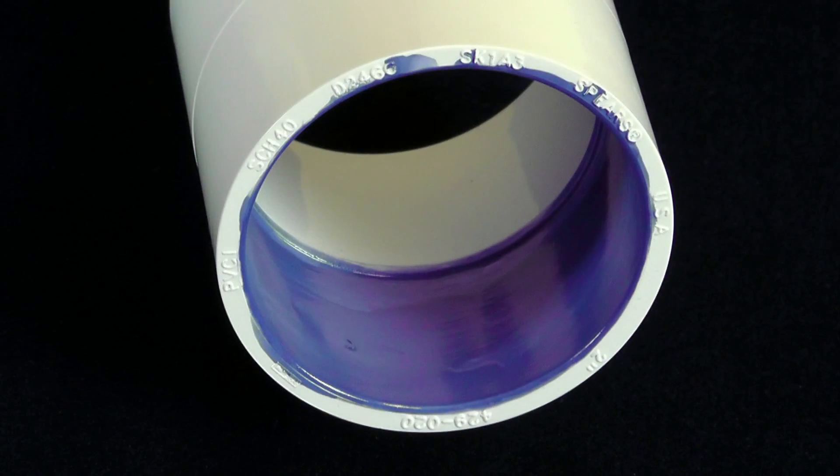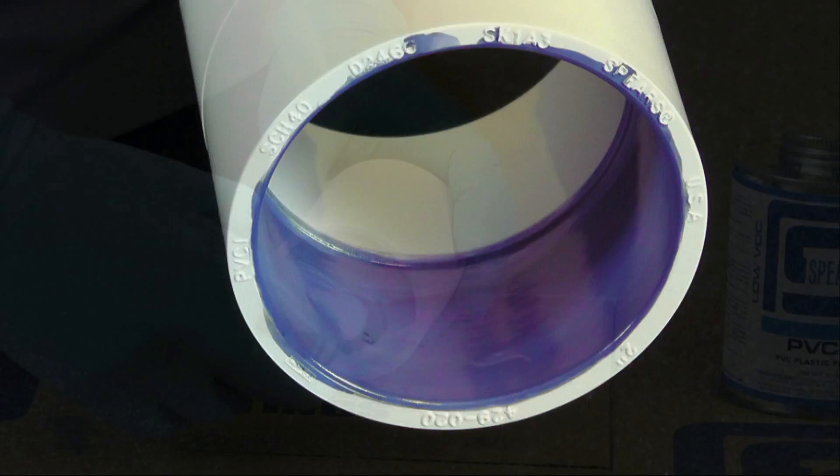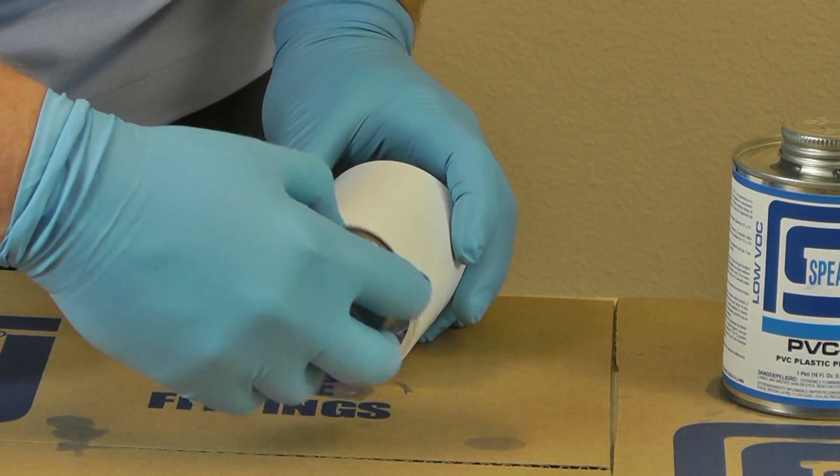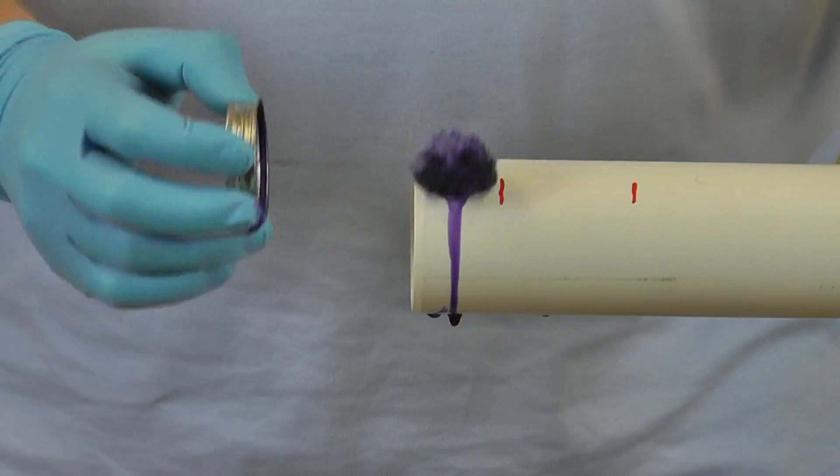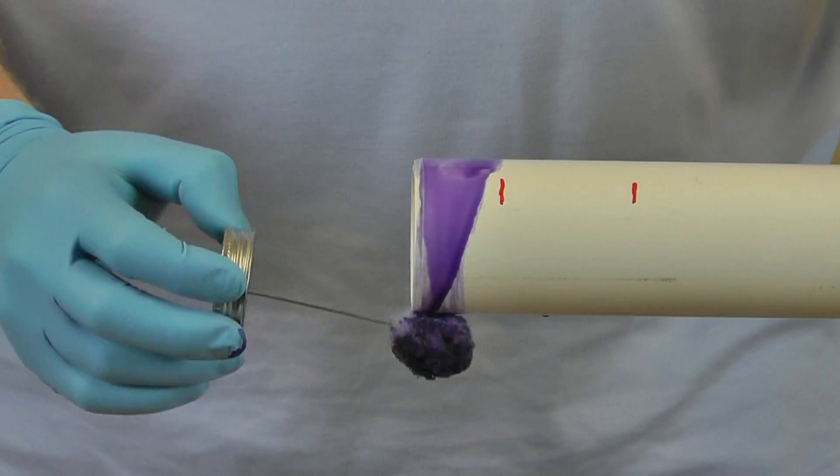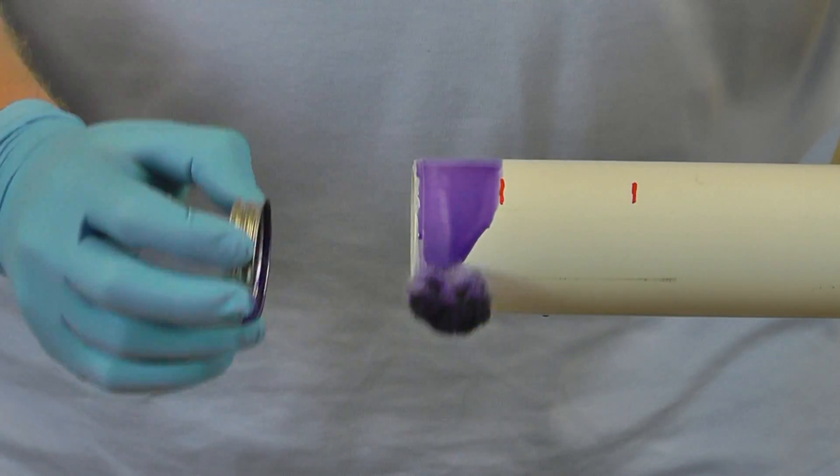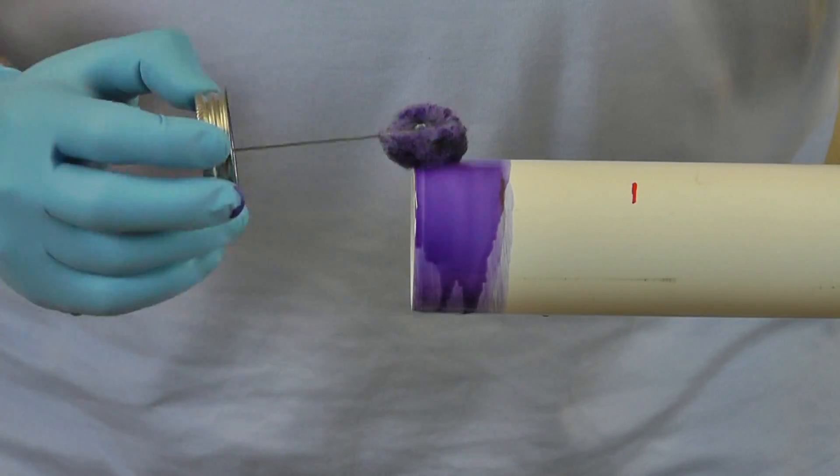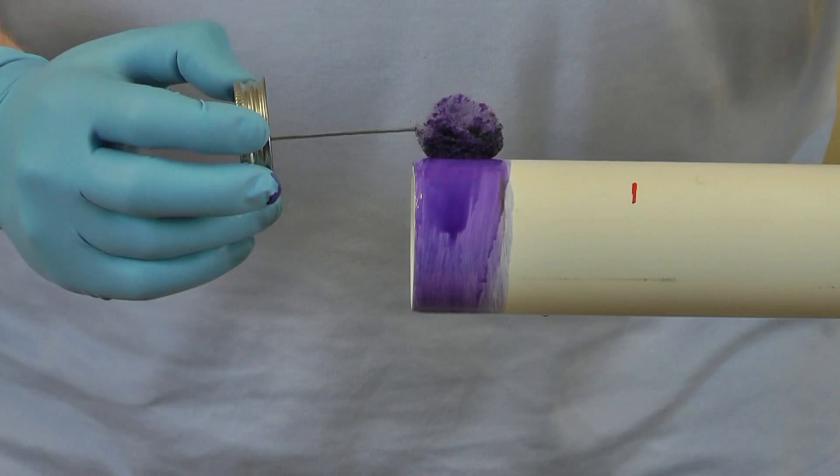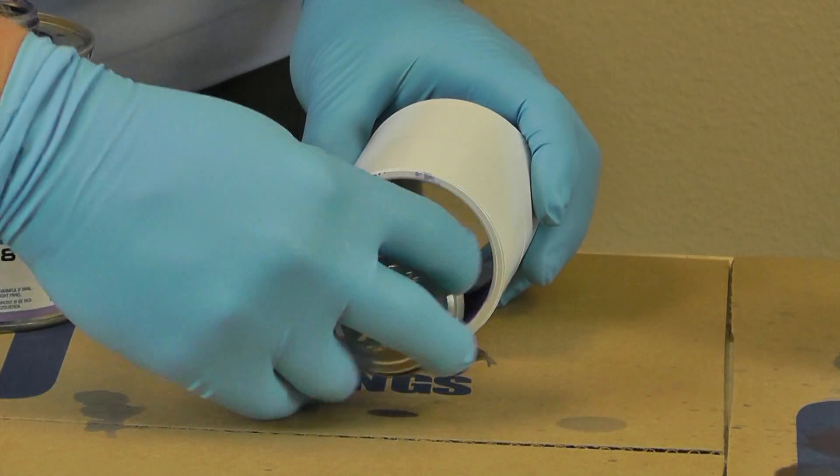Now apply primer to the fitting socket, then to the pipe, and again to the socket. Apply primer quickly and vigorously using a scrubbing or circular motion. Work quickly but do not allow primer to puddle in the fitting socket or run down the pipe. Remember, your goal is to soften the two surfaces so they may fuse together. Without softening, fusion cannot occur and a bad joint may result.